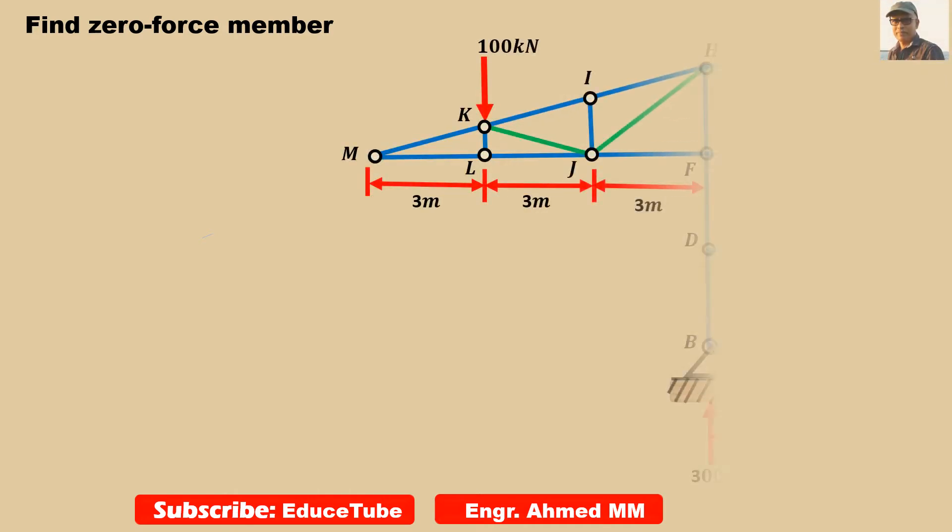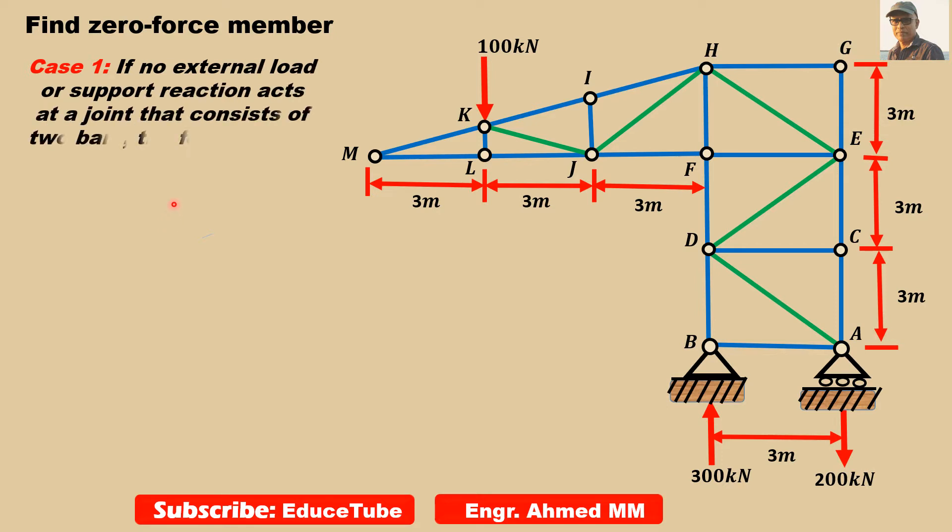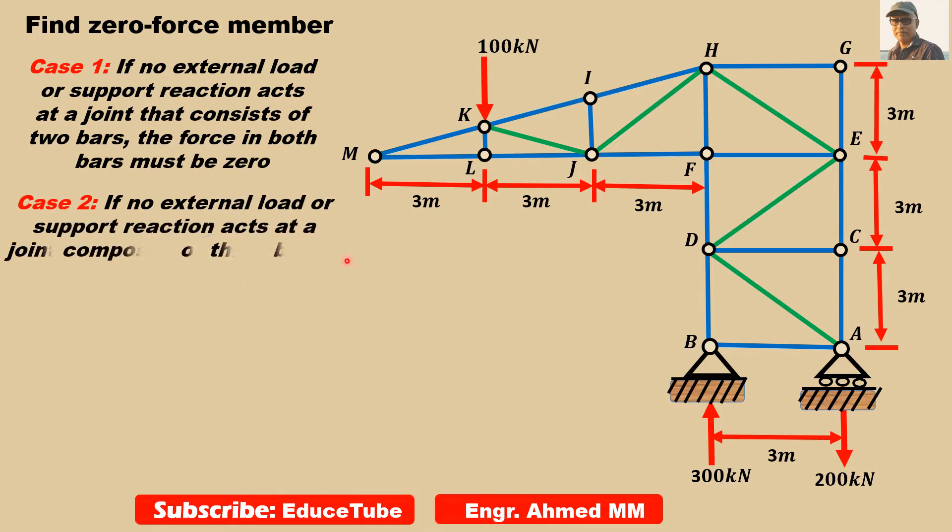I am taking the truss at the right hand side to do work on the left. Here I am writing two cases: Case number 1 and case number 2. Basically, these two cases we have to apply on this truss to find the zero force members.